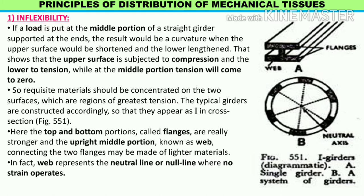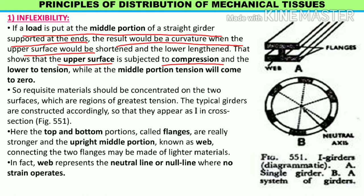Now we start with the different principles of distribution of mechanical tissue. First is inflexibility. Mechanical tissue ka bahut important property hota hai - jo mechanical tissue hota hai use bahut zyada flexible nahin hona chahiye. For example, if a load is put at the middle portion of a straight girder supported at the ends, the result would be curvature - where the upper surface would be shortened and the lower surface lengthened. This shows the upper surface is subjected to compression and lower to tension, while at the middle portion tension comes to zero.